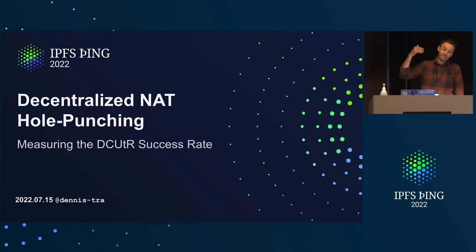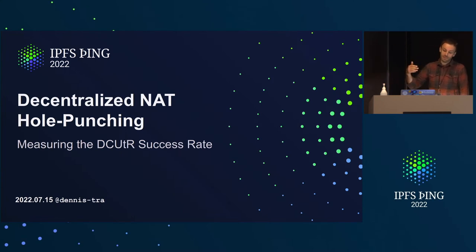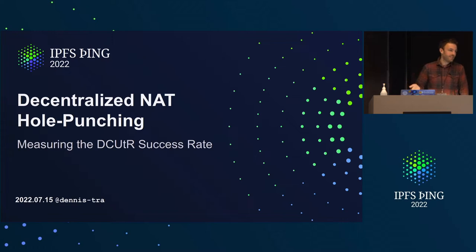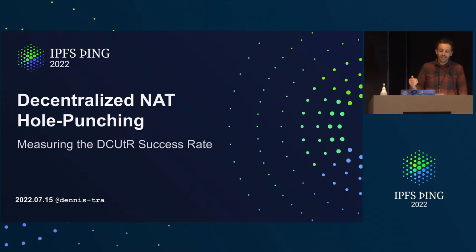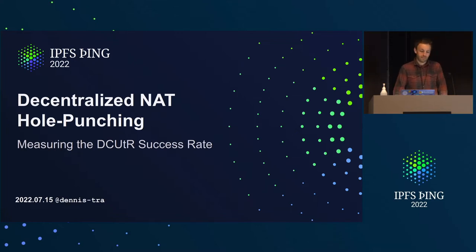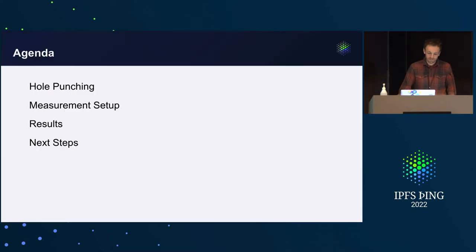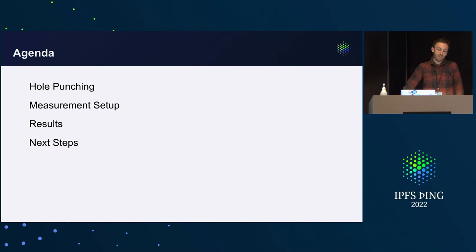My talk will be about decentralized NAT hole punching, and it's especially about measuring the DCUTR success rate. DCUTR stands for Direct Connection Upgrade Through Relays, and I will get to this in a second.